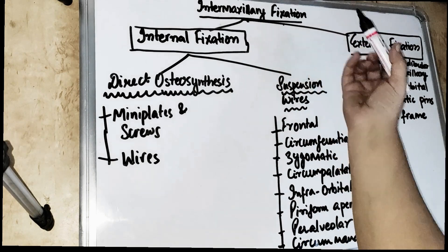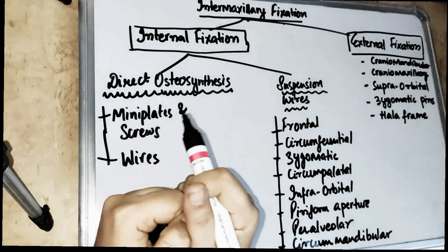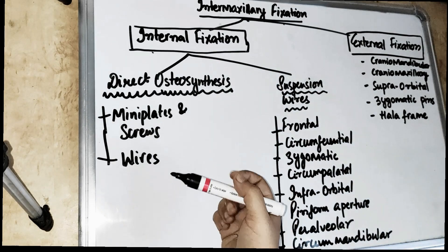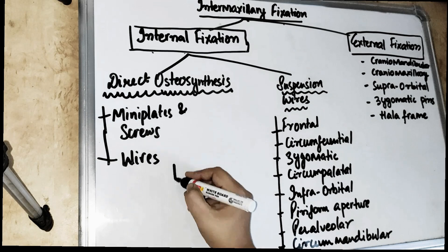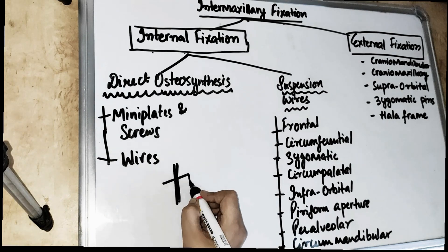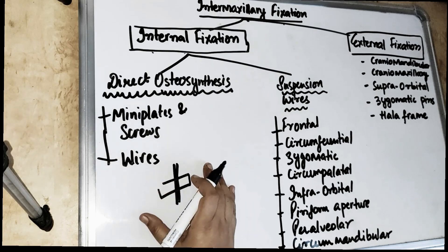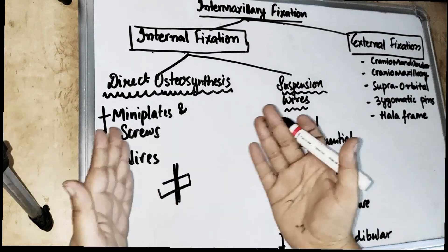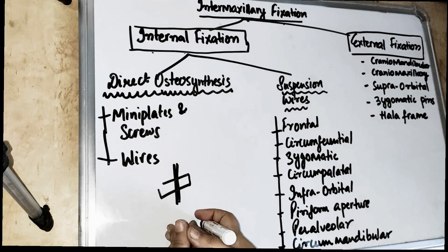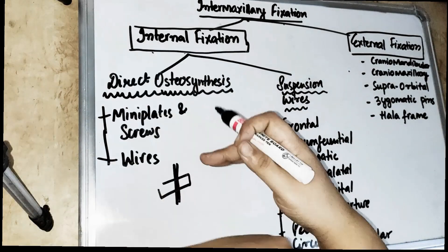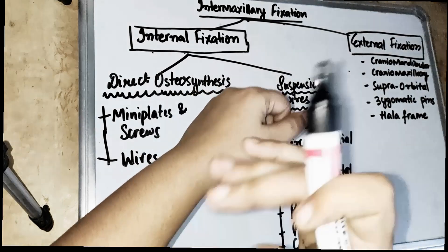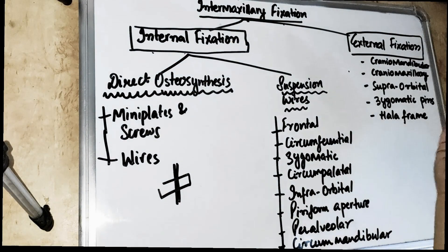In intermaxillary fixation, the maxilla and mandible are fixed together. After that, we have internal fixation and external fixation. Internal fixation is when we do open reduction — performing surgery and placing plates, screws, or wires. External fixation is like a plaster done in closed reduction, fixing the fracture fragments from the outside. Today's video is about internal fixation.